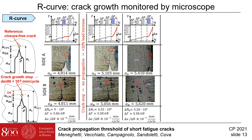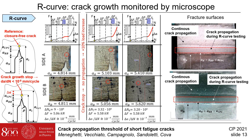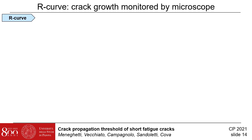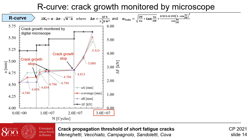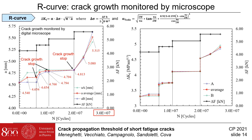Therefore, the long crack propagation threshold has been exceeded, and the crack was propagating as a long crack according to the Paris regime, up to the final failure of the specimen. The fractured surfaces show the original notch depth, the pre-crack, and the region of crack propagation and stops. The figure shows the data acquired during the whole R-curve test as a function of loading cycles, which reaches 30 million cycles. The black curve represents the load range, while the green and blue ones represent the crack length measured by the microscope at site A and B. The red curve represents the average crack length. The figure shows that the crack starts to propagate and then stops due to the build-up of the closure mechanism for 3 times. Having the crack length and the corresponding applied loads, it is possible to calculate the range of the stress intensity factor and define a threshold when a crack stop has been detected.